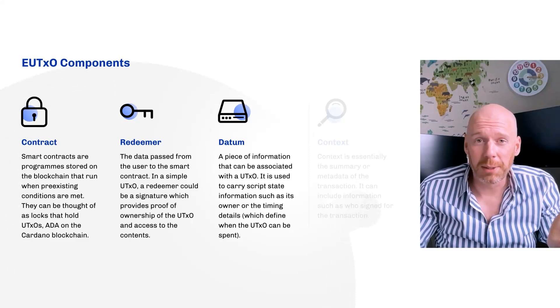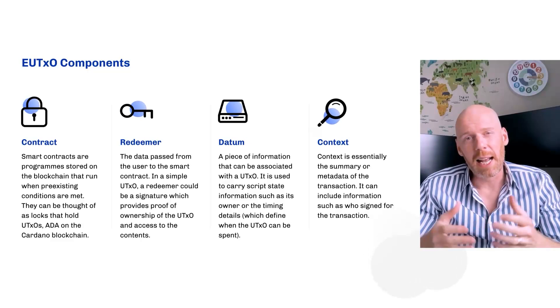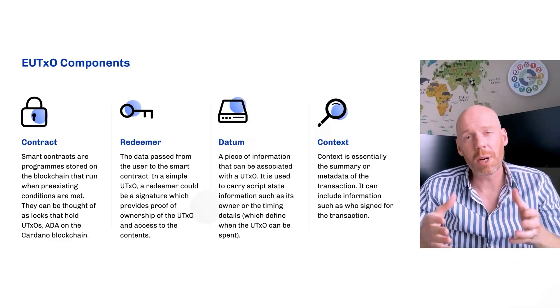And then finally, we have a thing called context, which is really like metadata. You're able to inspect the transaction and say: who signed this? What account is this spending to? That kind of thing. So if you wrap these four items up together, this forms the heart of what we call EUTXO. And it turns out that EUTXO is all we need to enable all classes of smart contract, DeFi, or other Web3 application on Cardano.